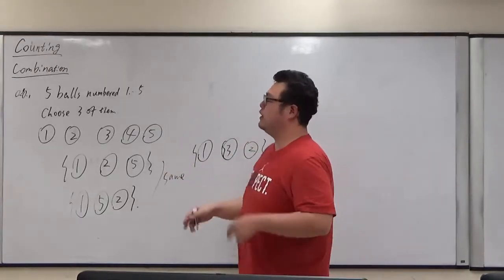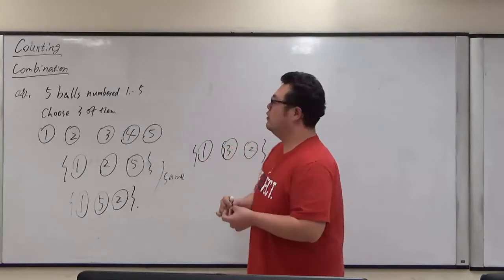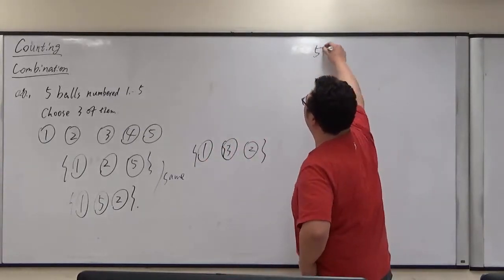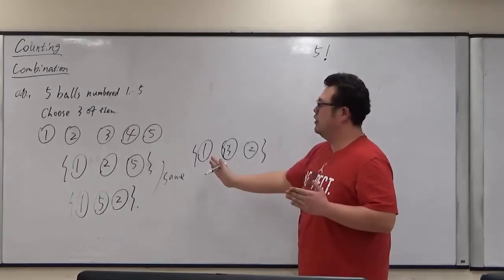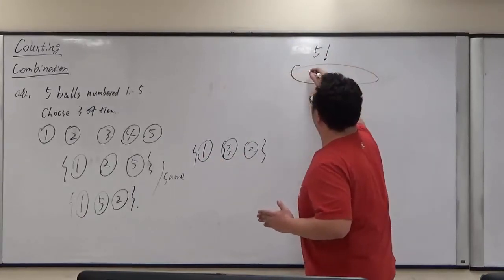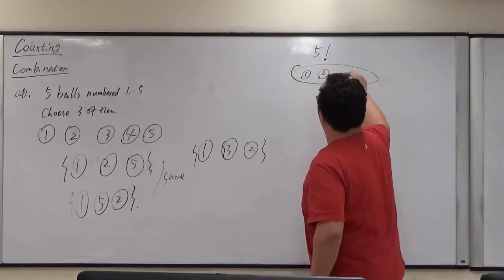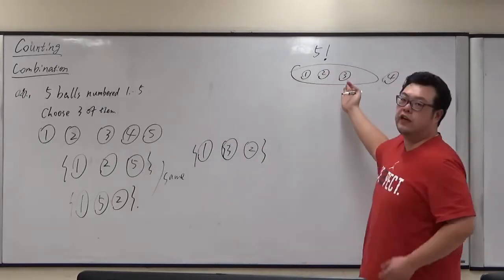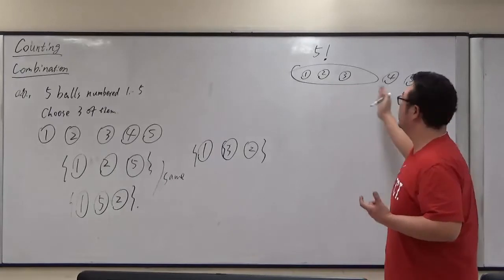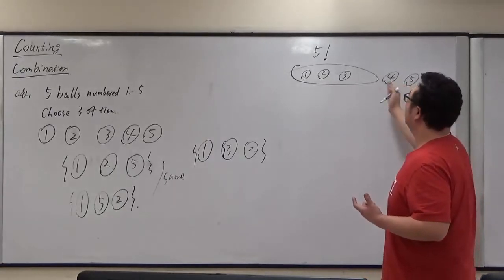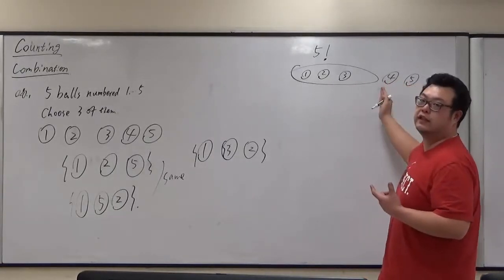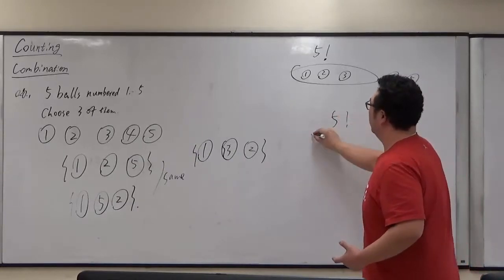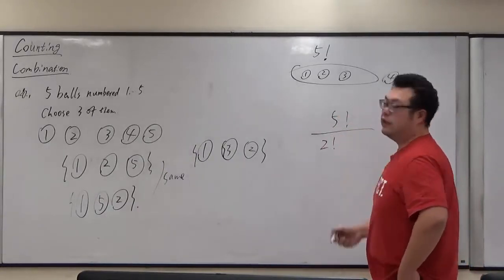So what we do is similar as the permutation. If we choose three, we're trying to rearrange the five balls first. But we only care about what we are choosing. So the order over there does not matter. The order of what we've not chosen does not matter. That does not matter at all.